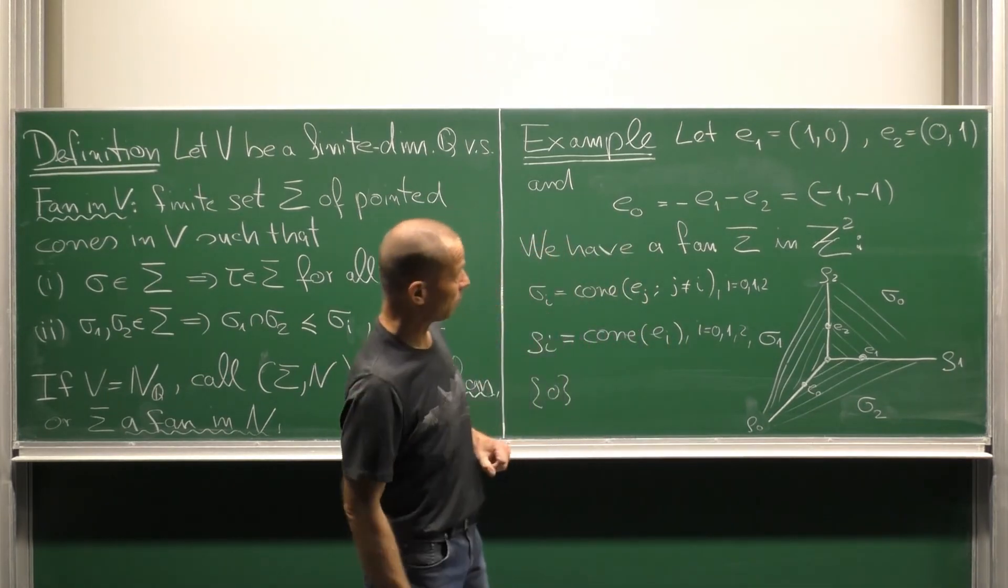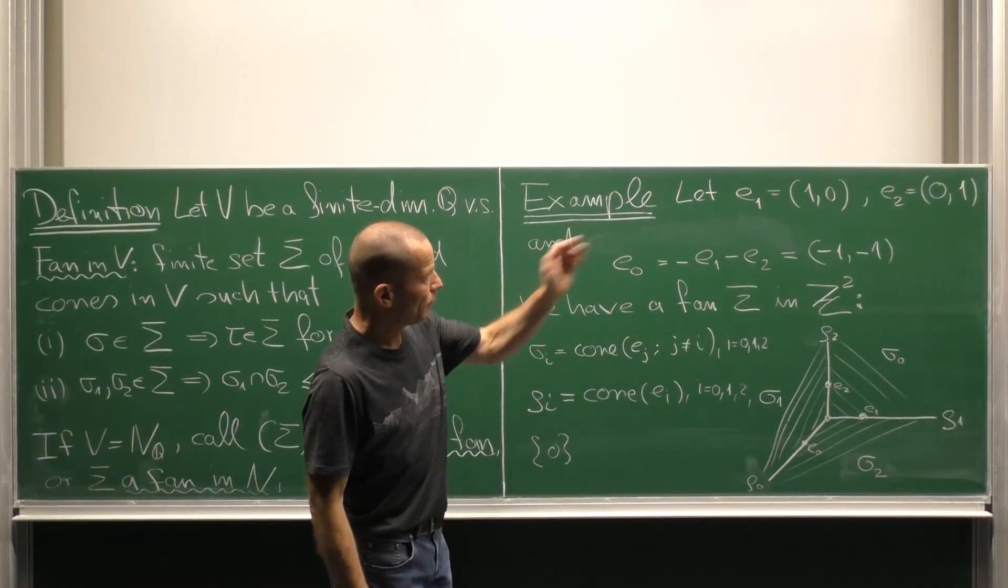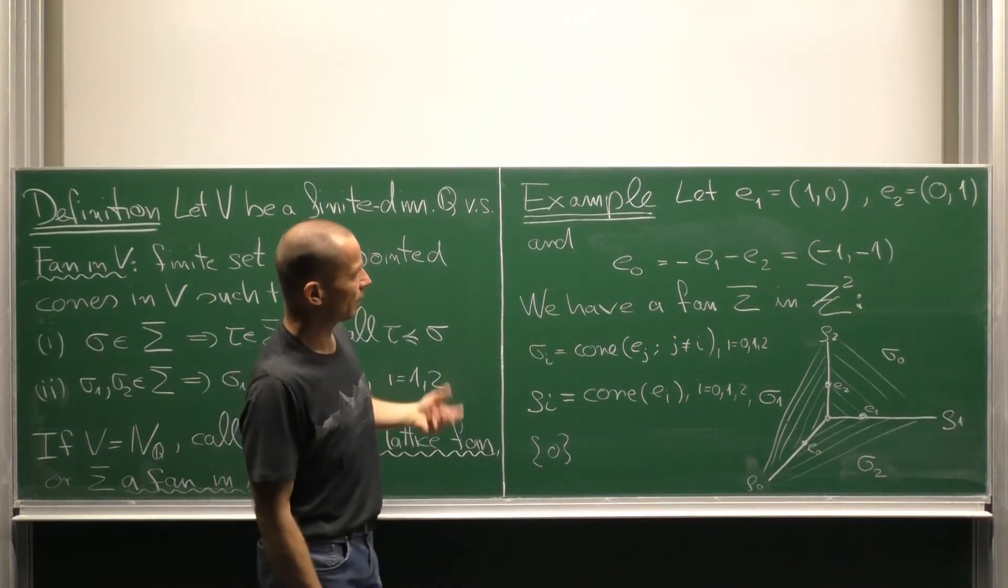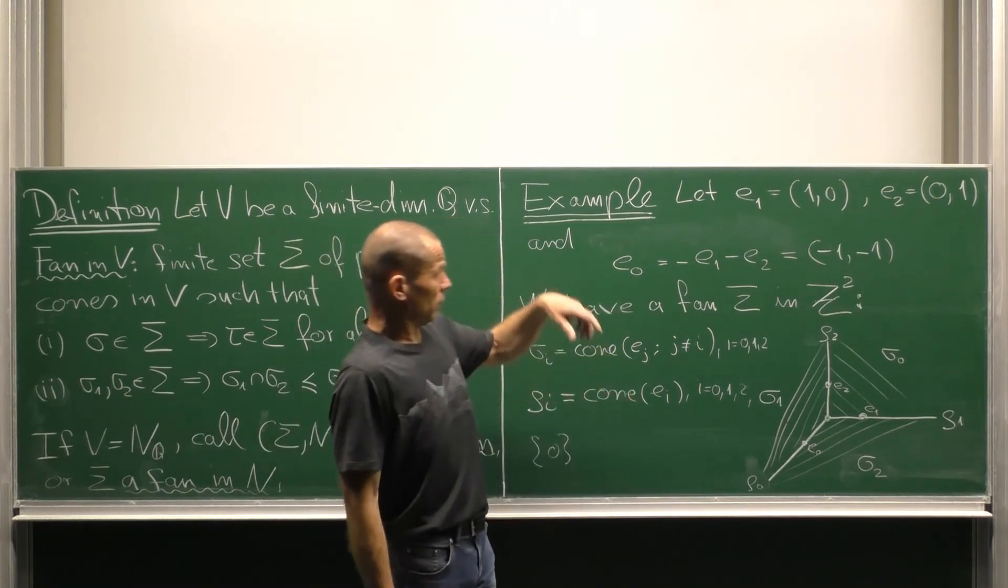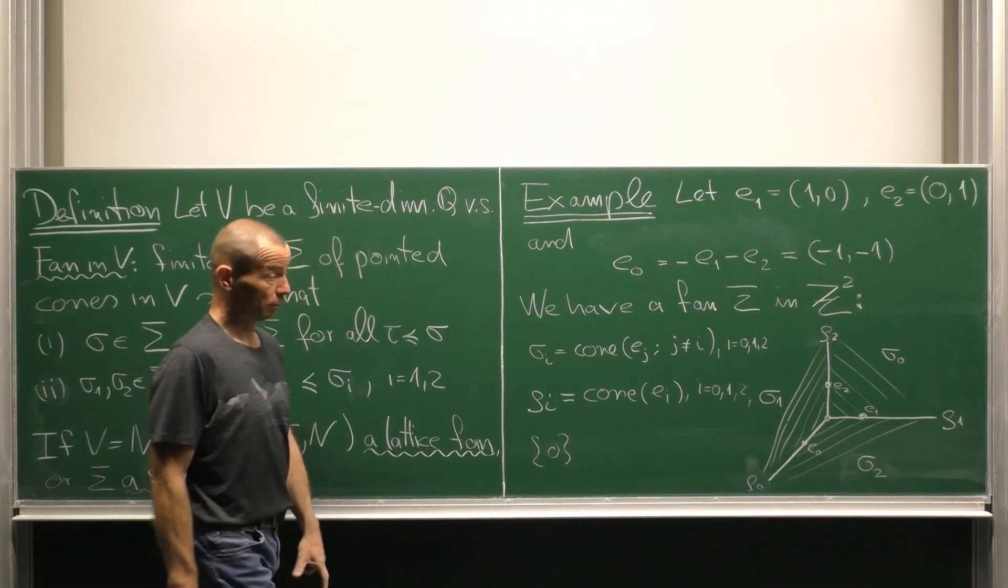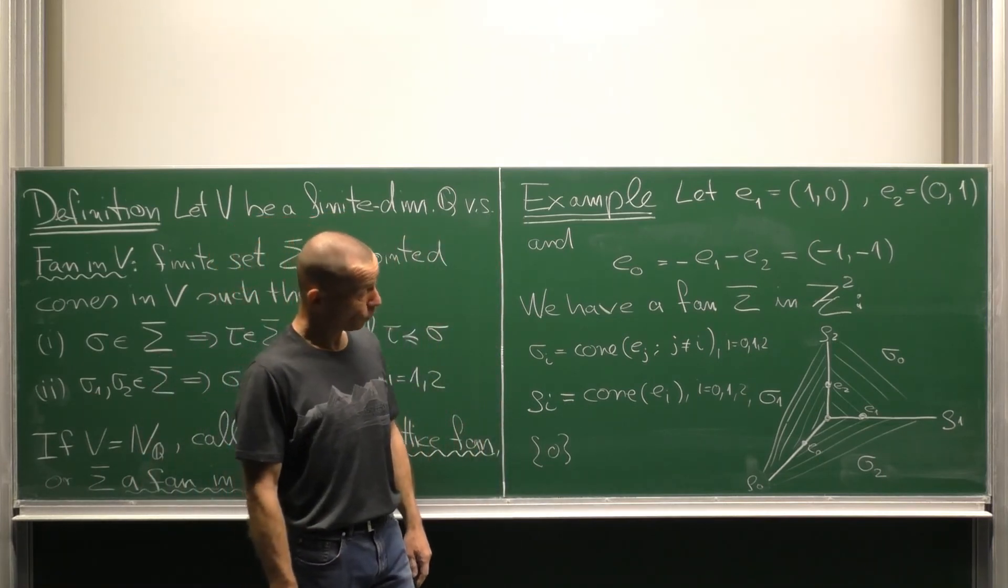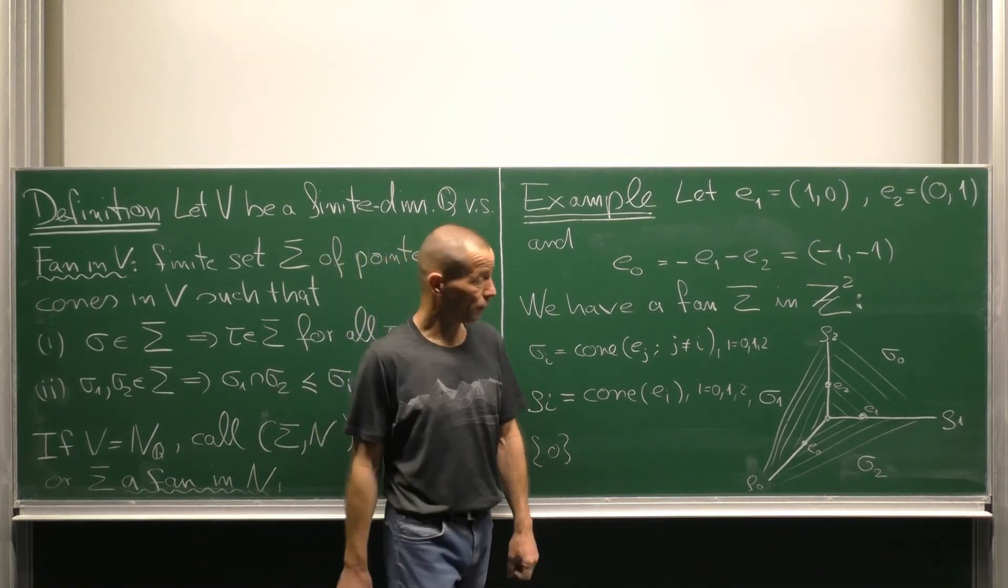Let us have a look at an example. Consider the canonical basis vectors e1, e2 and Z2 and set e0 to be minus e1, minus e2. That means a vector (-1,-1). Then we obtain a fan, sigma and Z2 by taking the following cones.